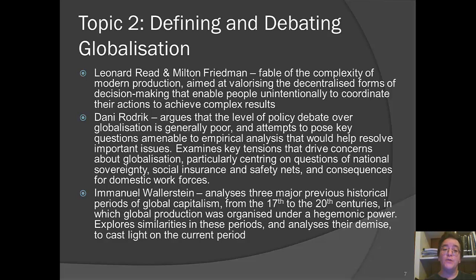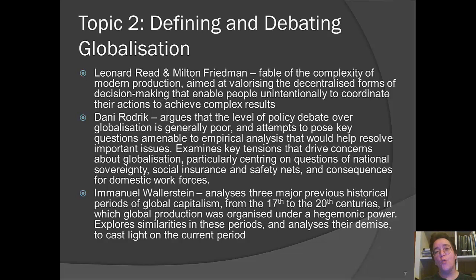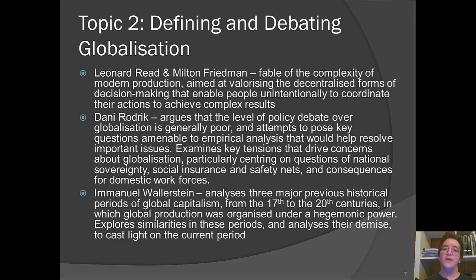Immanuel Wallerstein is a prominent world systems theorist with a conception of capitalism as a global phenomenon that has gone through several stages in its long history. He looks at three stages in which a hegemonic power organized production, arguing this is not the norm and doesn't tend to stay that way for long. He thinks one of these periods ended in the late 1960s and we're now in a new and slightly more unpredictable world, analyzing the demise of earlier periods of hegemonic organization to cast light on our current period.